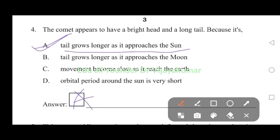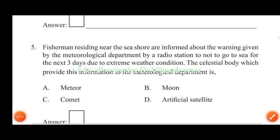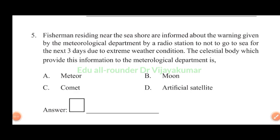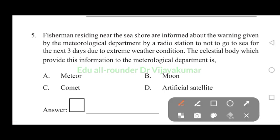Fishermen residing near the seashore are informed about the warning given by the meteorological department by radio station to not go to sea for the next three days due to extreme weather conditions. The celestial body which provides this information to the meteorological department is: meteor, moon, comet, or artificial satellite. Answer is artificial satellite.